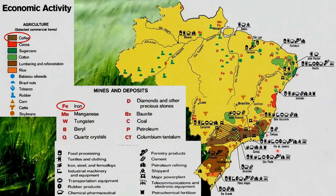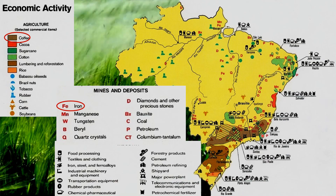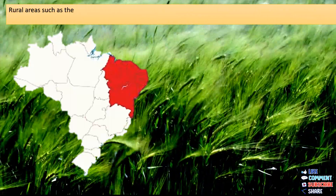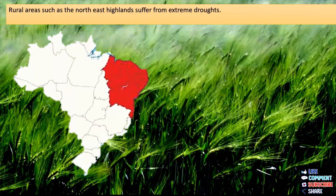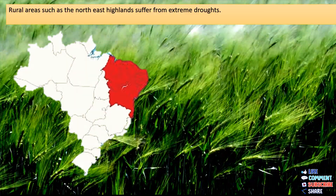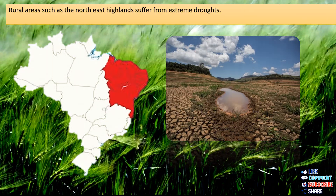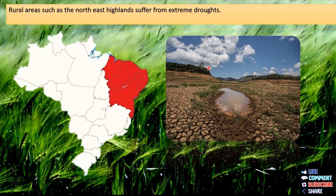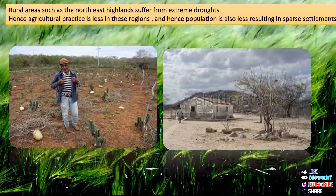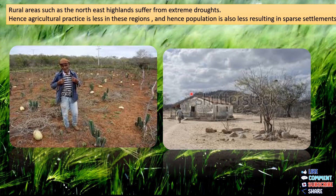All these factors give rise to a huge population, so the coastal area is therefore densely populated with more settlements. In the northeastern part of the highlands, also known as the drought quadrilateral, there is very less rainfall — at times no rainfall — and that is the reason this region experiences droughts and famines. Because of less or no rainfall, the practice of agriculture is less in this region, and hence population is also less, resulting in sparse settlements.